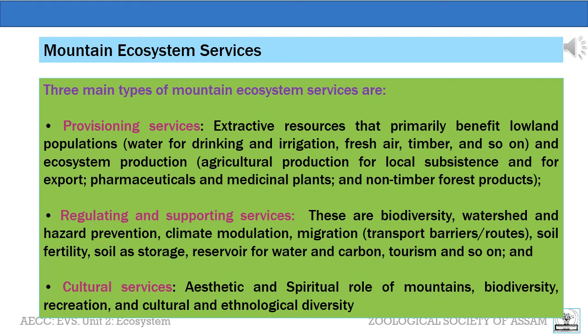The next type is the regulating and supporting services. These include biodiversity, watershed and hazard prevention, climate modulation, migration — that is the transport barriers or the routes — soil fertility, soil as storage, reservoir for water and carbon, and tourism. The third is the cultural services: the aesthetic and spiritual role of mountains, biodiversity, recreation, and cultural and ethnological diversity are some of the mountain ecosystem services.